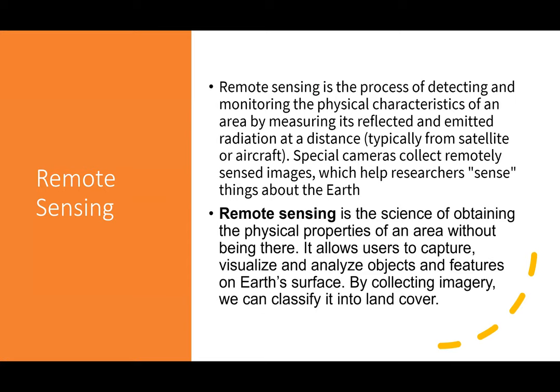Moving from GPS, we're going to talk about remote sensing. There is a relationship between the two because of satellite imagery. Remote sensing is the process of detecting and monitoring the physical characteristics of an area by measuring its reflected and emitted radiation at a distance, typically from satellite or aircraft. Special cameras collect remotely sensed images to help researchers sense things about the earth — sensing from afar. It allows users to capture, visualize, and analyze objects and features on earth's surface.